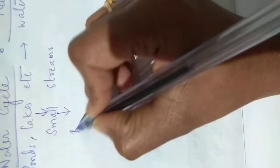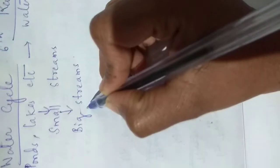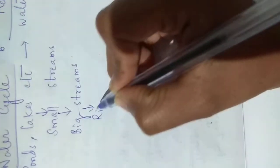From the ponds and lakes, it enters into small streams. Small streams mein jo paani hai, that will come and enter into big streams. And big streams mein jo bhi paani hai, that will enter into rivers.